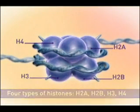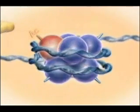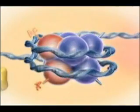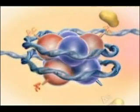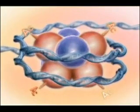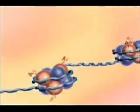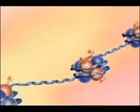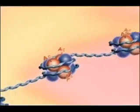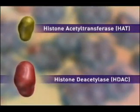Epigenetic modifications, such as histone acetylation, occur at the amino-terminal tails of the histones that protrude from the nucleosomes. Acetylation of histones plays a key role in the regulation of gene expression, and is controlled by the balance in the activity of two enzymes: histone acetyltransferase (HAT) and histone deacetylase (HDAC).